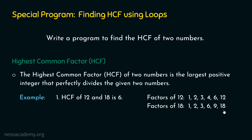Now we observe carefully. 1 is a common factor of 12 and 18 because 1 divides both. 2 is also a common factor because 2 divides both 12 and 18. 3 is the common factor as well. What about 4? 4 is not the common factor — 4 can only divide 12 and not 18. What about 6? 6 is the common factor — it is present in both lists. 12 is not a common factor because 12 can only divide 12, not 18. 9 and 18 are also not common factors.